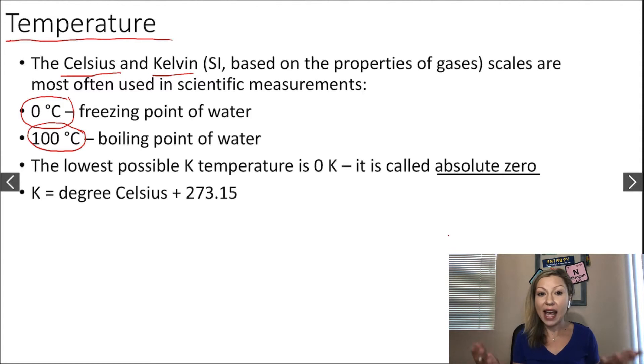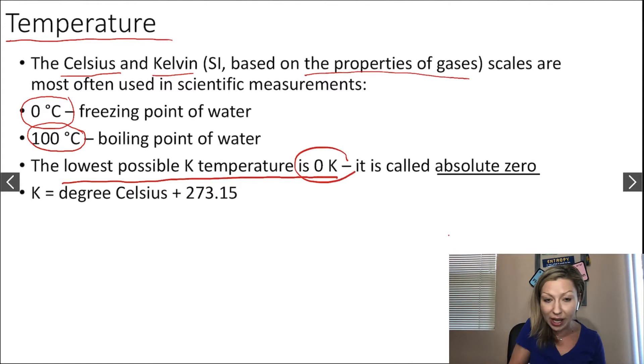Kelvin is actually based on the properties of gases, and we're going to talk about it later in general chemistry. What you have to know about Kelvin temperatures is that the lowest possible Kelvin temperature is 0 K. You cannot have negative Kelvin temperatures, and this temperature is called absolute zero.